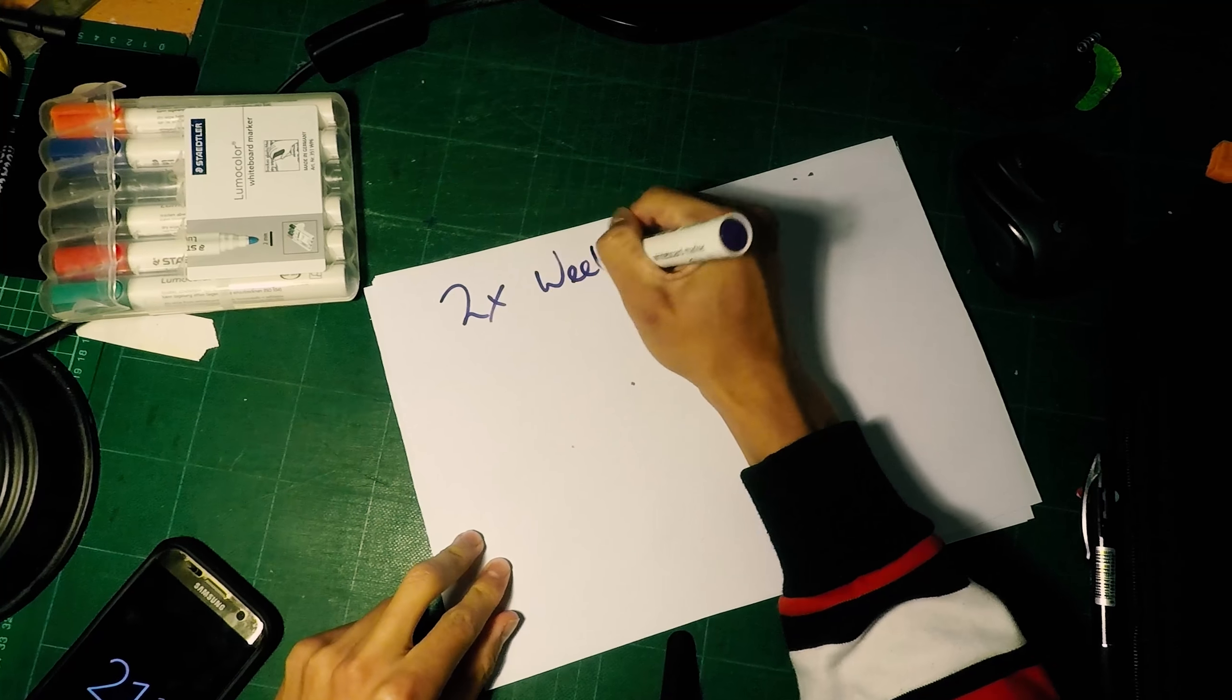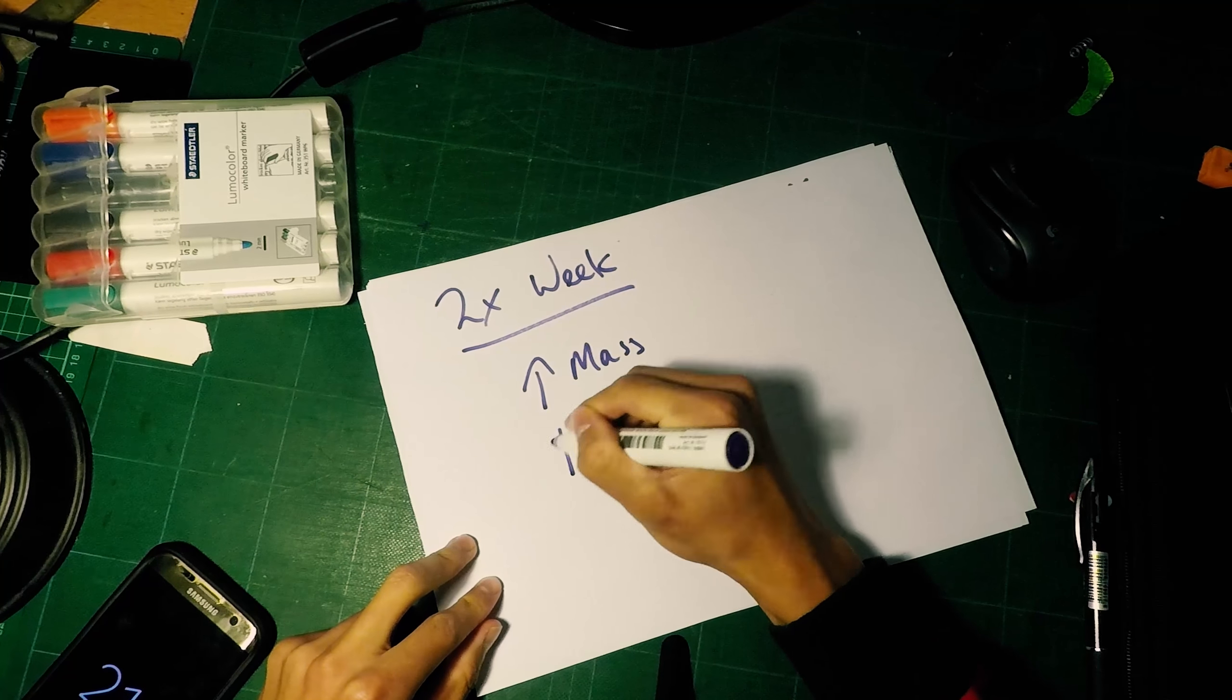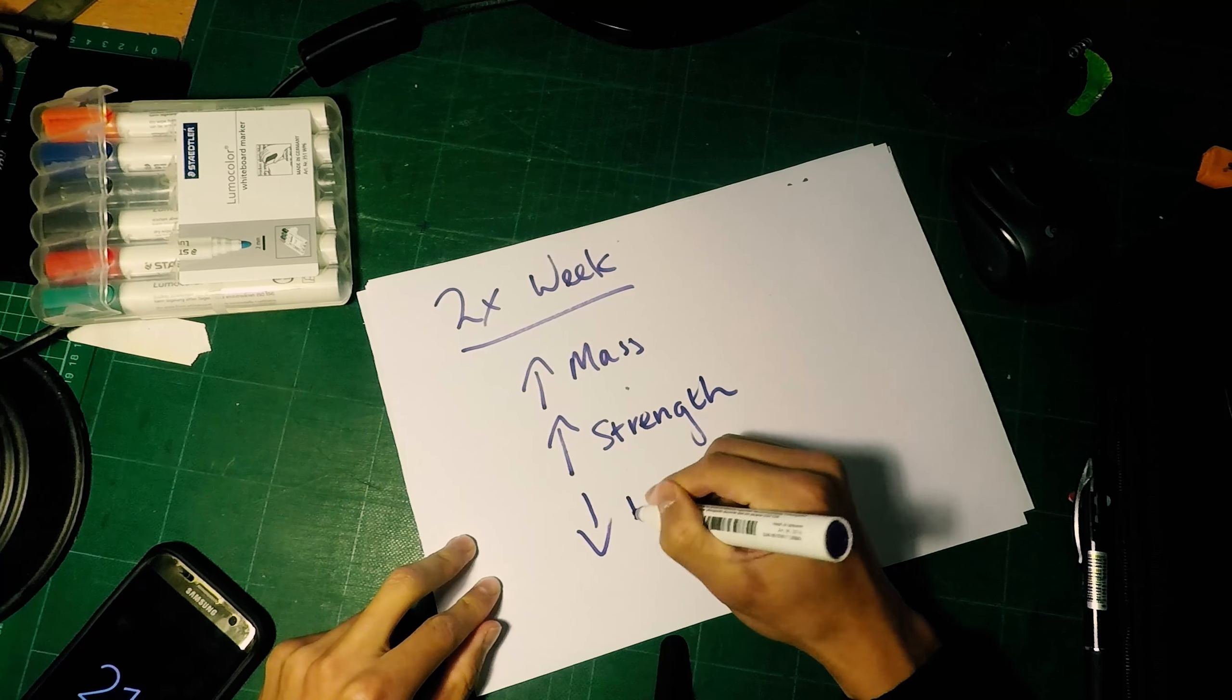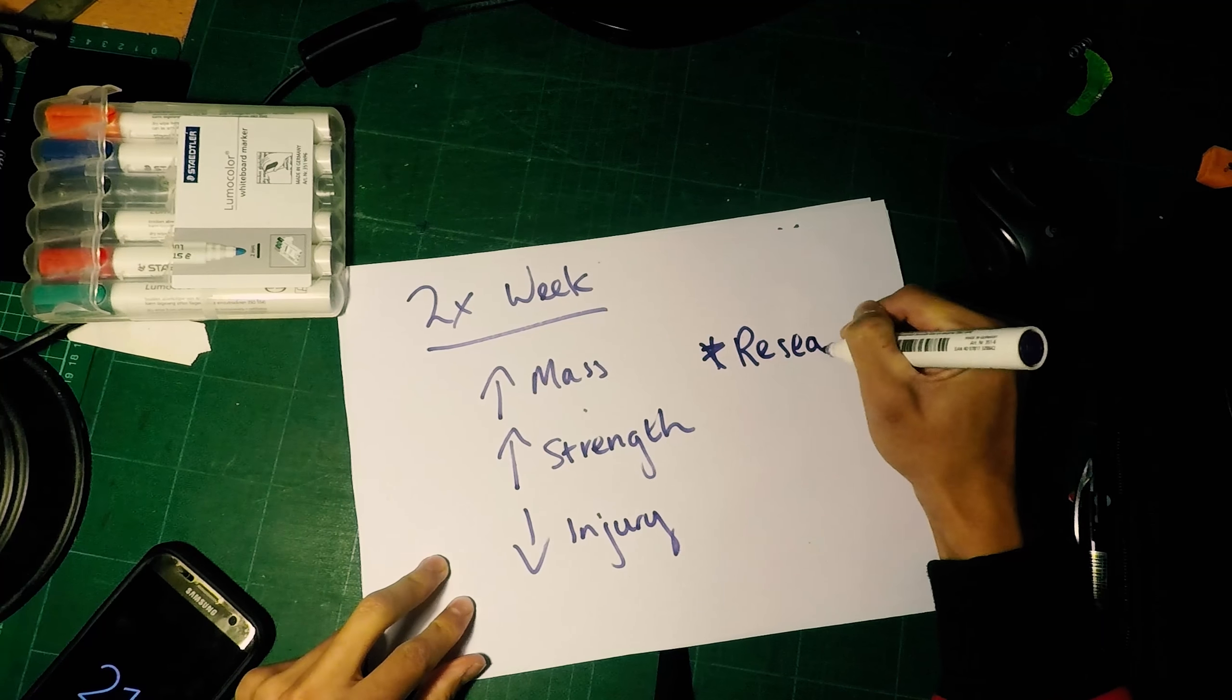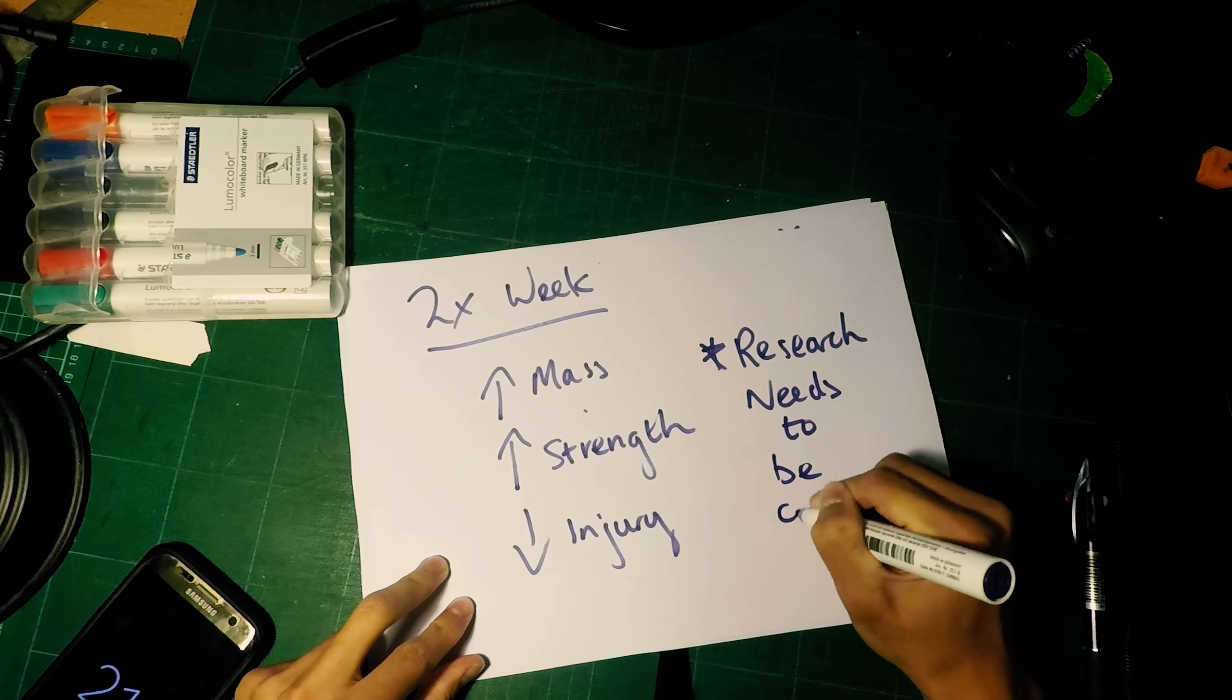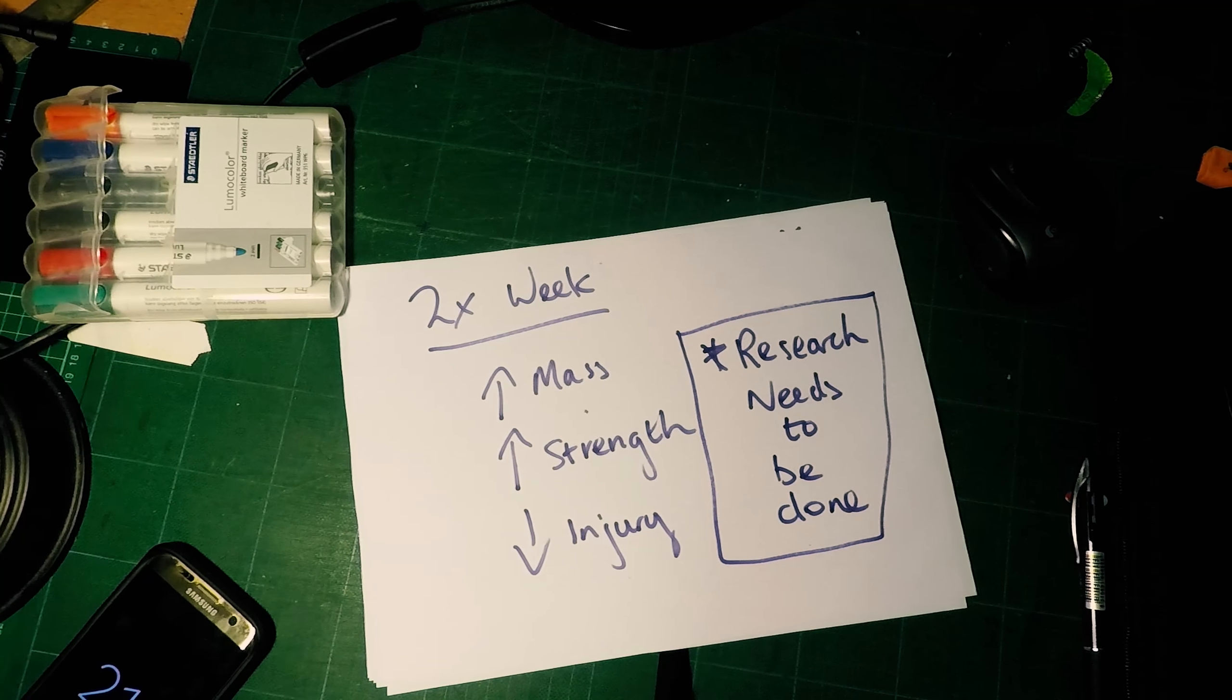You might as well spend that other time doing a swim, cycle, another run, or even something like yoga. Lifting two times a week, you're still going to get increased strength, decrease the injury risk, and increase mass only slightly because you're still doing all that other aerobic activity.